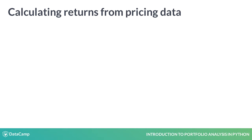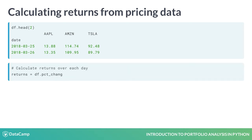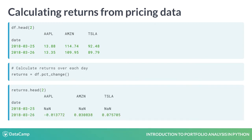Let's calculate portfolio returns. Let's take price data from these three stocks — Apple, Amazon and Tesla. The portfolio return will be today's value minus yesterday's value divided by yesterday's value. You can simply use the percentage change function to do this for you. The newly created daily returns data frame tells you by how much percent the price of a stock has changed relative to yesterday's value.